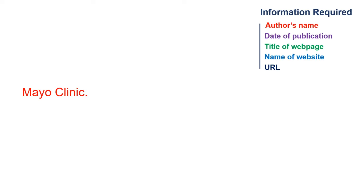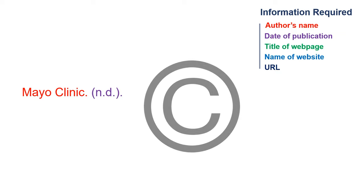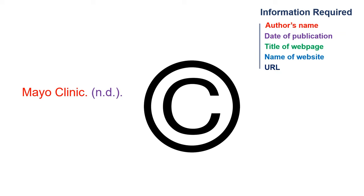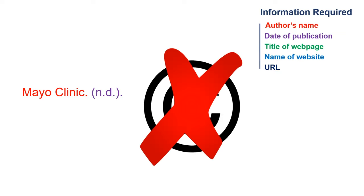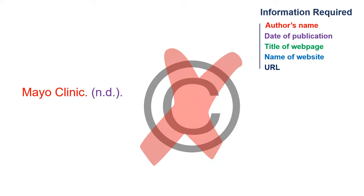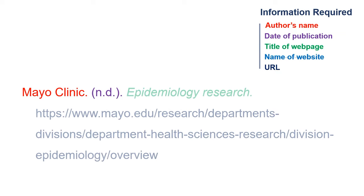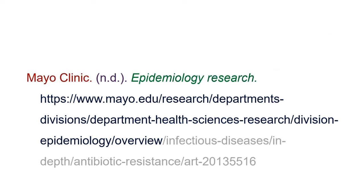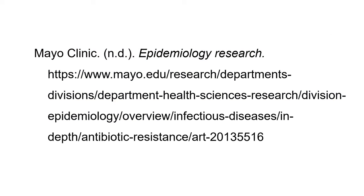If you can't find a date of publication, use n.d. to represent no date instead. If the only date on the website is in the copyright statement, APA style recommends that you do not use it. This is your APA website citation for a web page with no date.